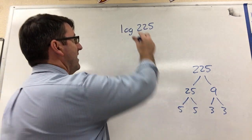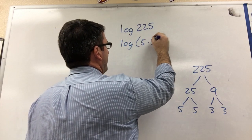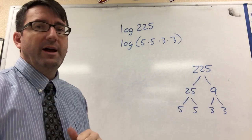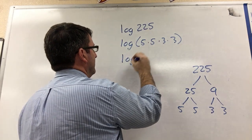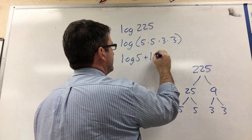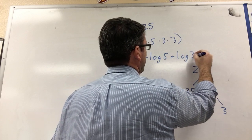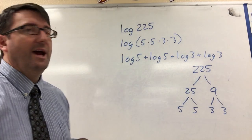So let's rewrite log 225 as log of 5 times 5 times 3 times 3. Then we can use the product property: this is log 5 plus log 5 plus log 3 plus log 3, and then combine